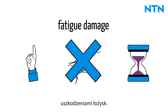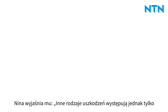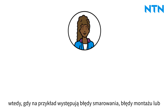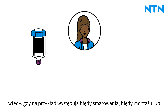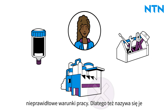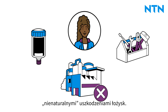Nina explains to him that other types of damage only occur if, for example, there are lubrication errors, assembly errors, or incorrect operating conditions. That is why they are called unnatural bearing damage.